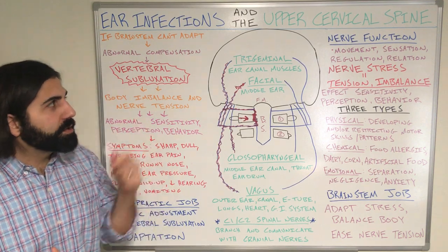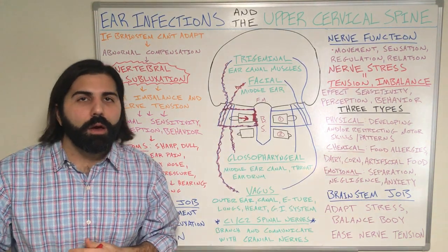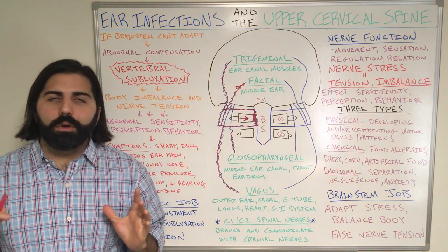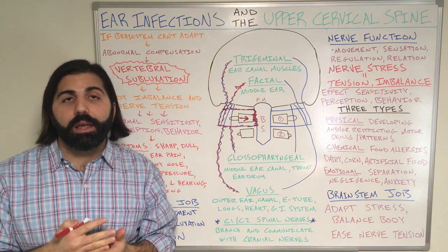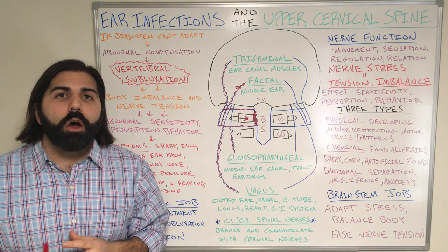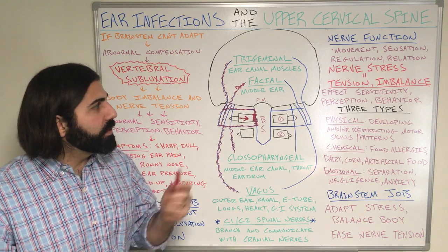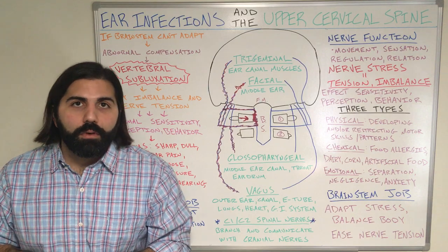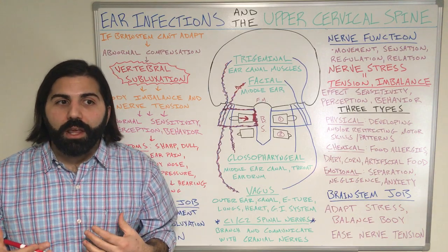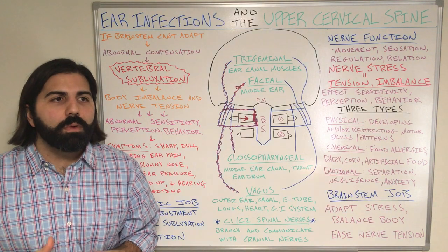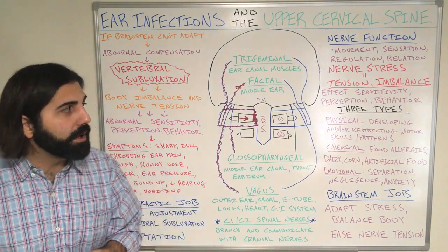Today on this video, we're going to talk about the connection between ear infections and the upper cervical spine. Although chiropractic does not treat any disease directly, such as ear infections, our main goal is to improve the integrity of the nervous system at the brainstem level. When we do this, we can allow a better functioning and expression of our nervous system, which equates with better health and well-being.